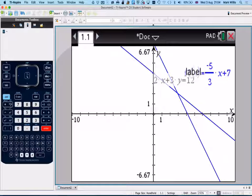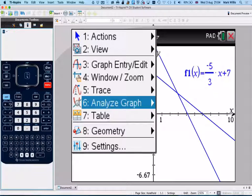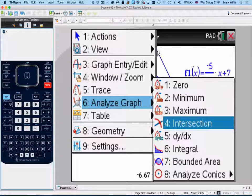Press enter, and we've got the other one there. We're just going to move the label out of the way. We are interested in the point of intersection, so in order to do that, we'll just do menu, analyze the graph, intersection.